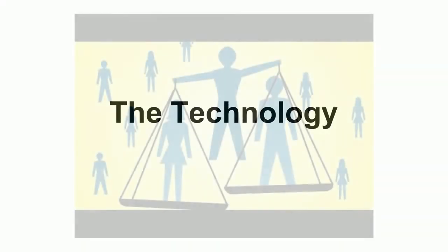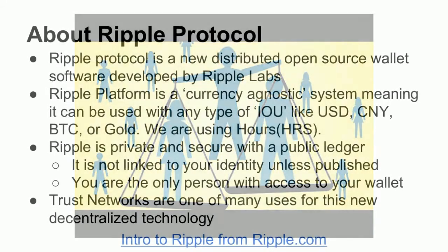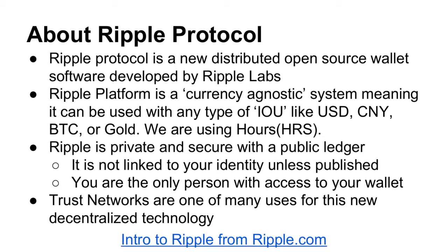Ripple protocol is a new distributed open source wallet software developed by Ripple Labs. Ripple platform is a currency-agnostic system, meaning it can be used with any type of IOU — like U.S. dollar, CNY, Bitcoin, or gold. In our system, we're using hours. It's important to understand that whether your money is in a bank or whatever currency it is, it's an IOU. All the money that we use is IOUs. Ripple is private and secure with a public ledger. It is not linked to your identity unless you publish it. You are the only person with access to your wallet using private key, public key encryption-style techniques. Trust networks are one of many uses for this decentralized technology.